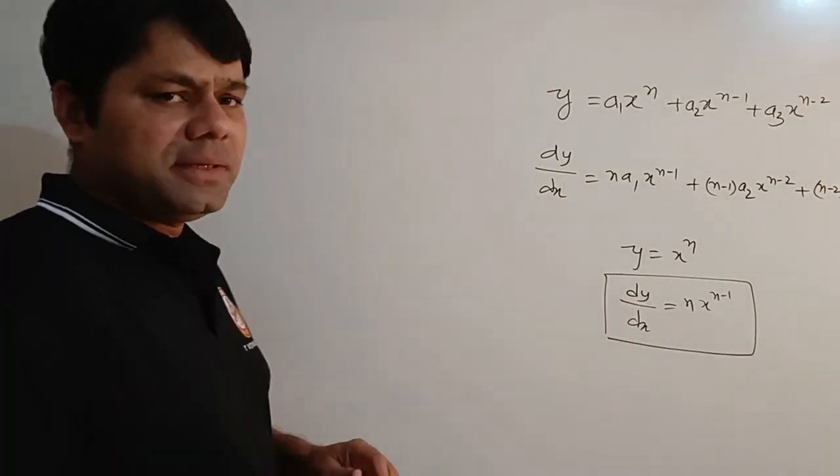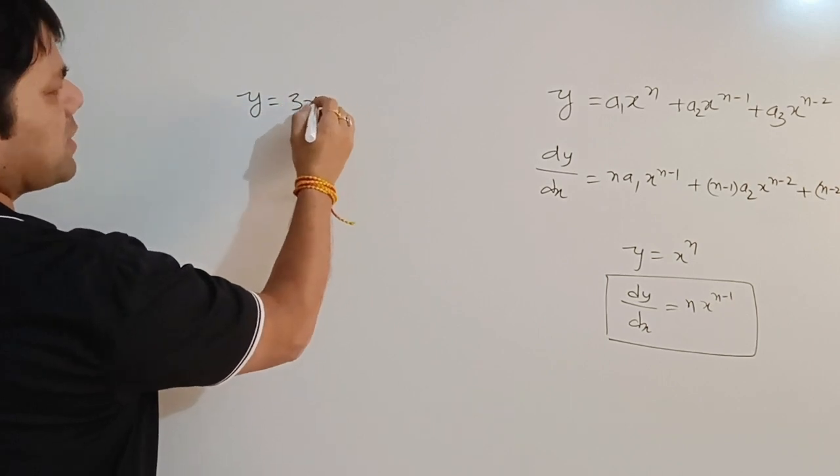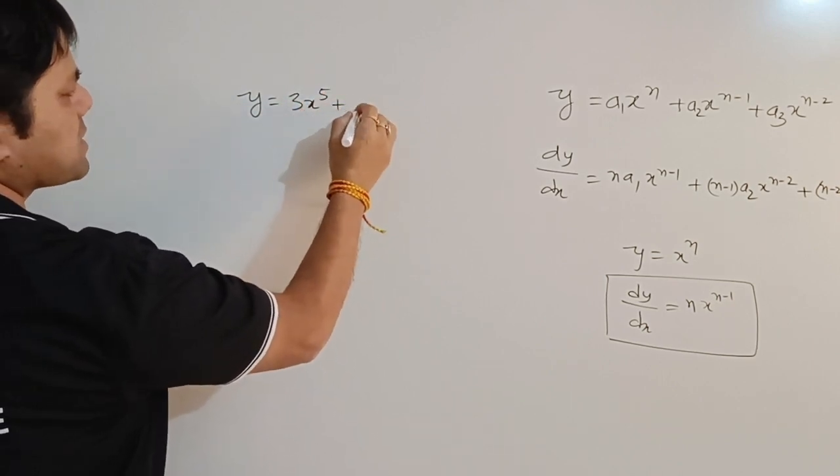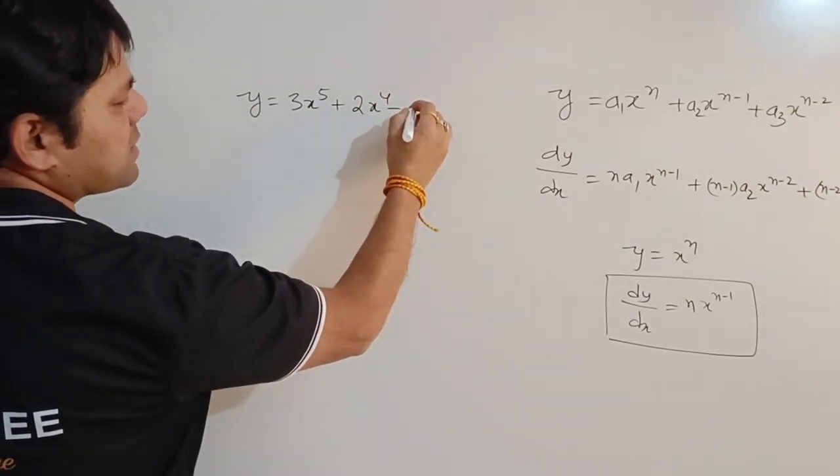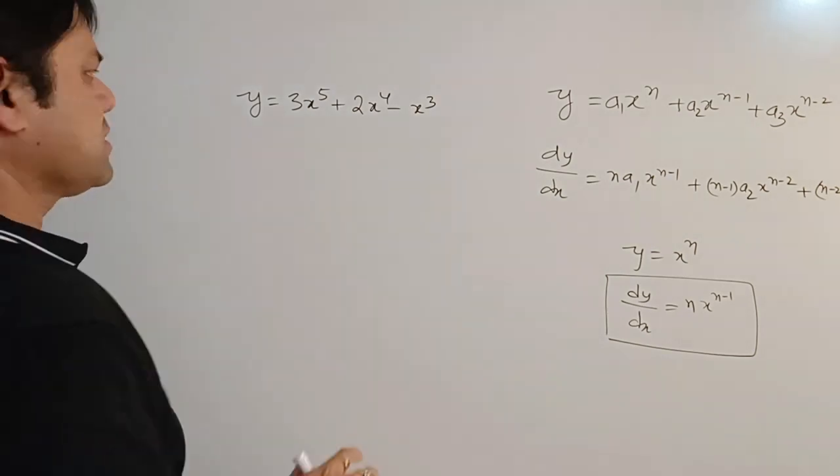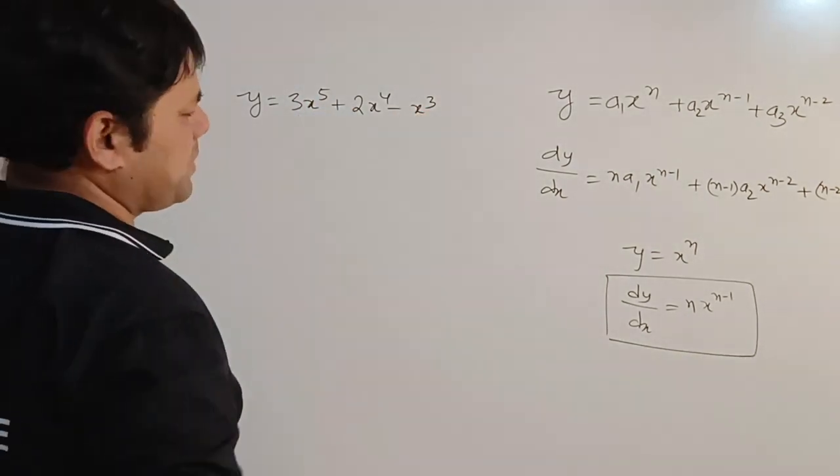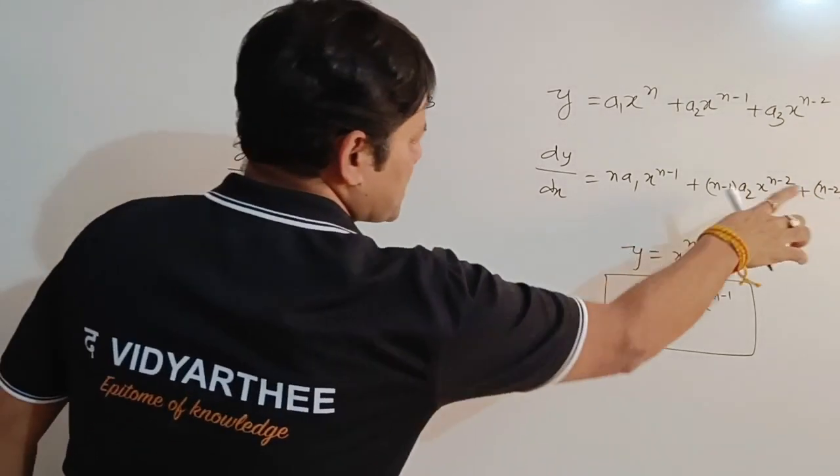For example, we will take y equals 3x to the power 5 plus 2x to the power 4 minus x to the power 3. It is not necessary that it will be in a particular order. So what will be dy/dx in this case? We will use this property.